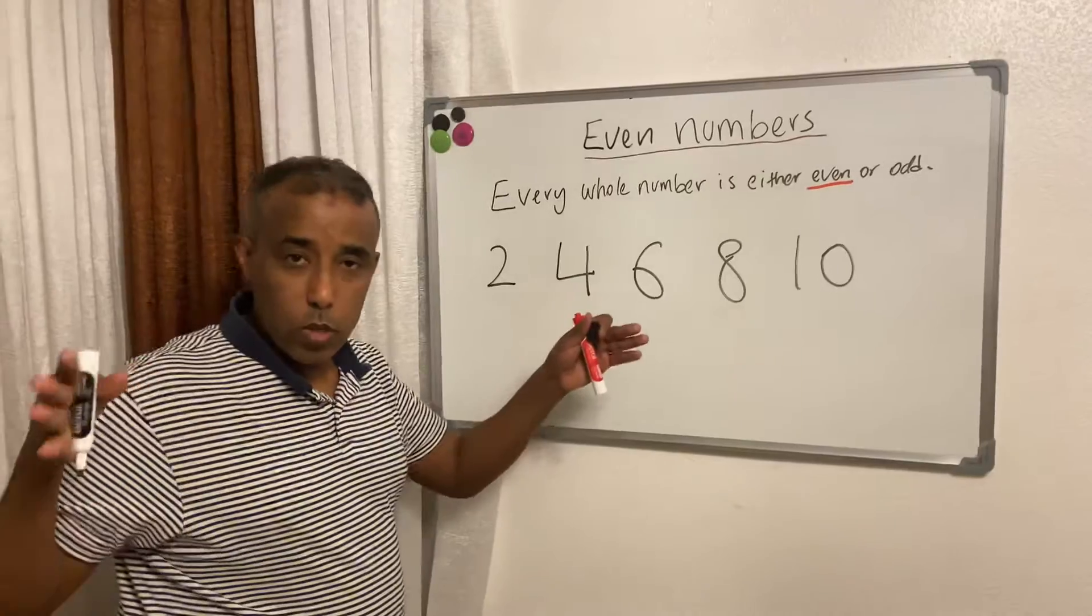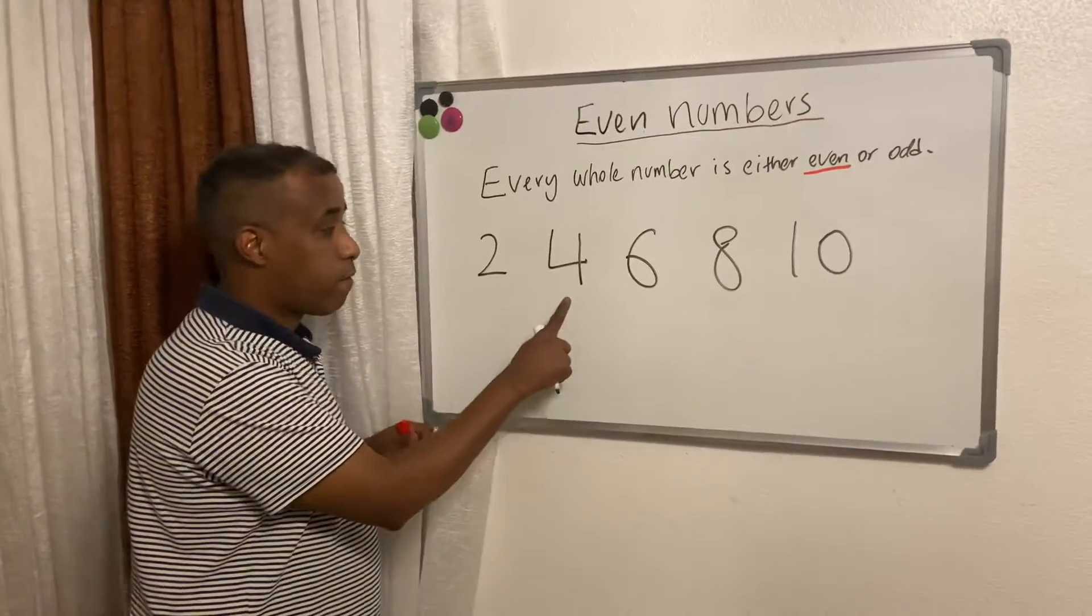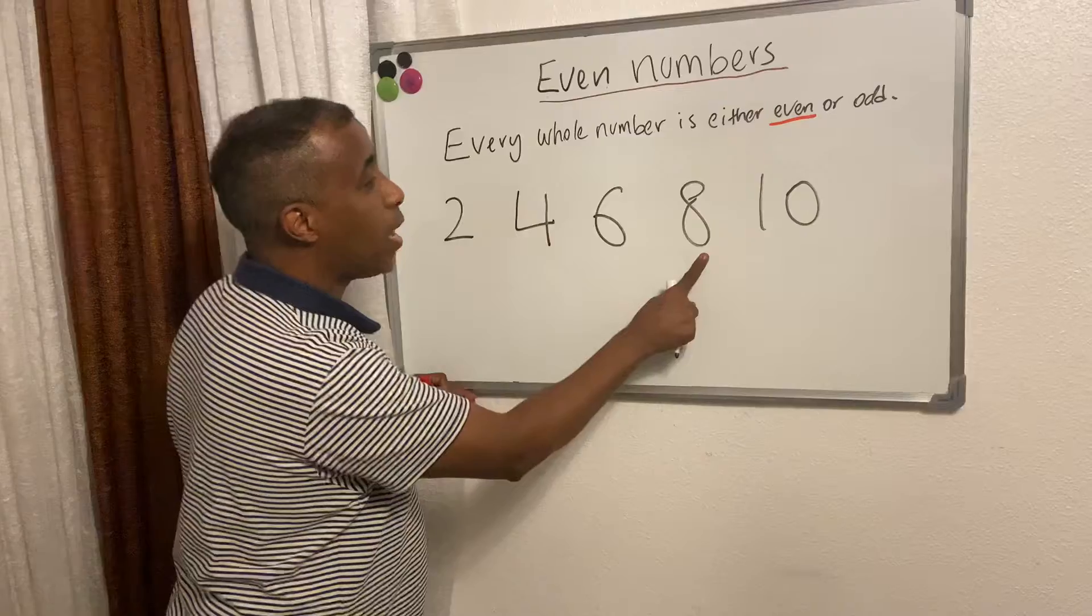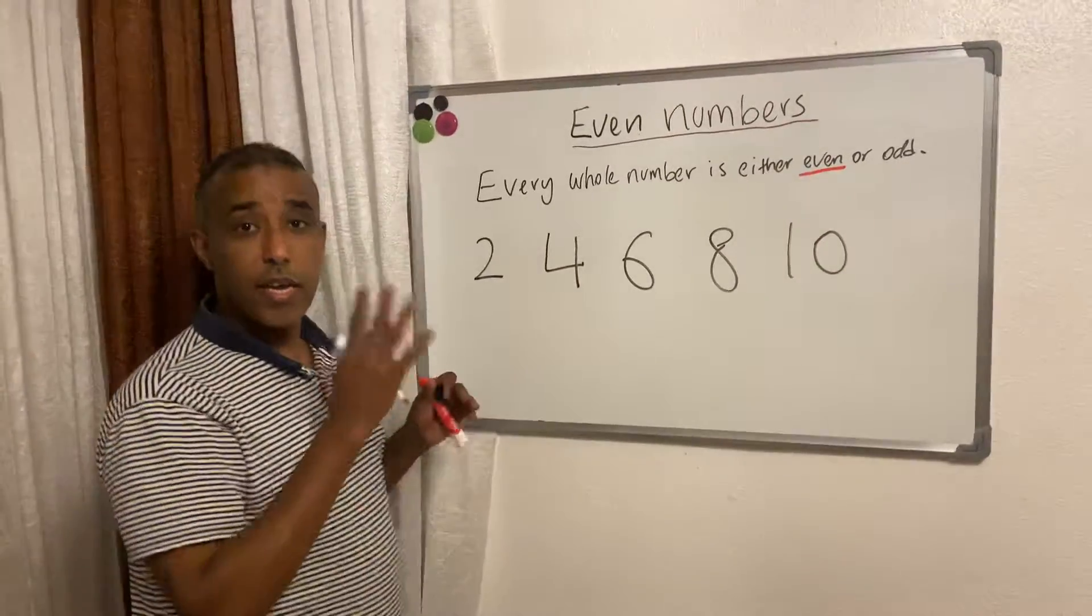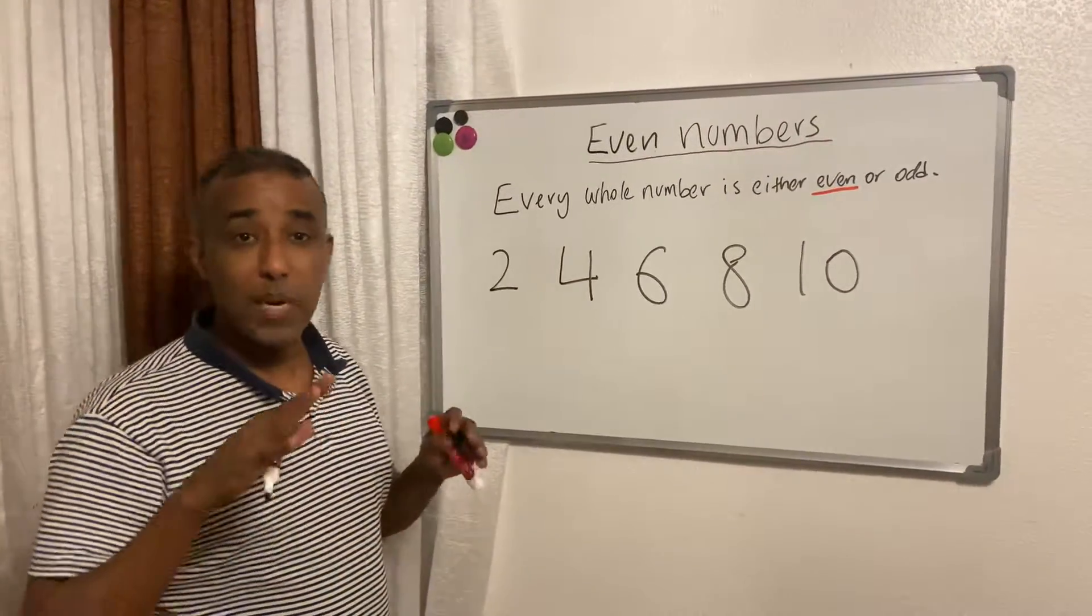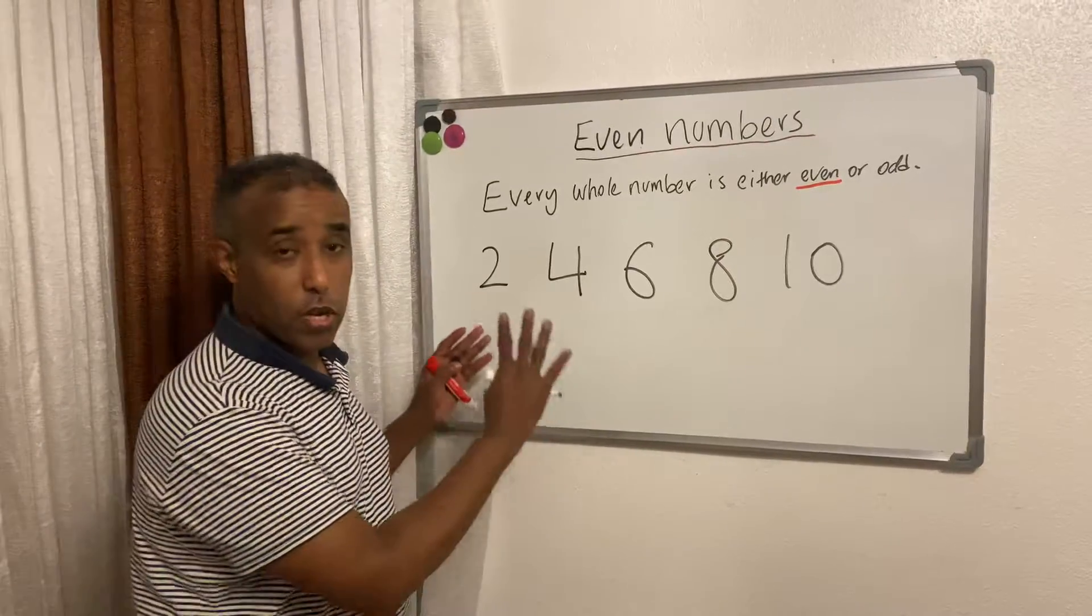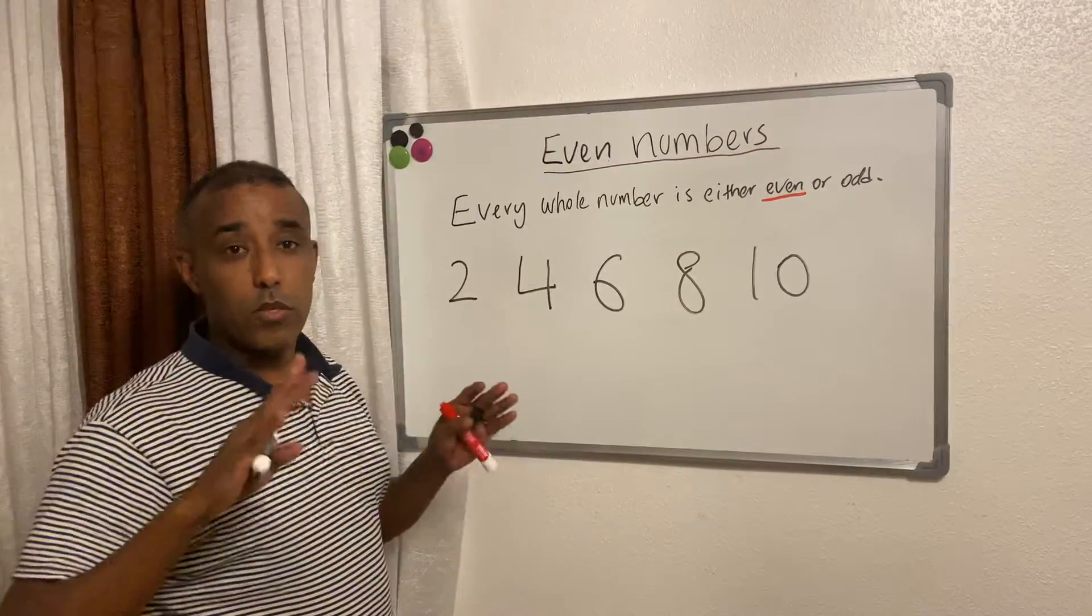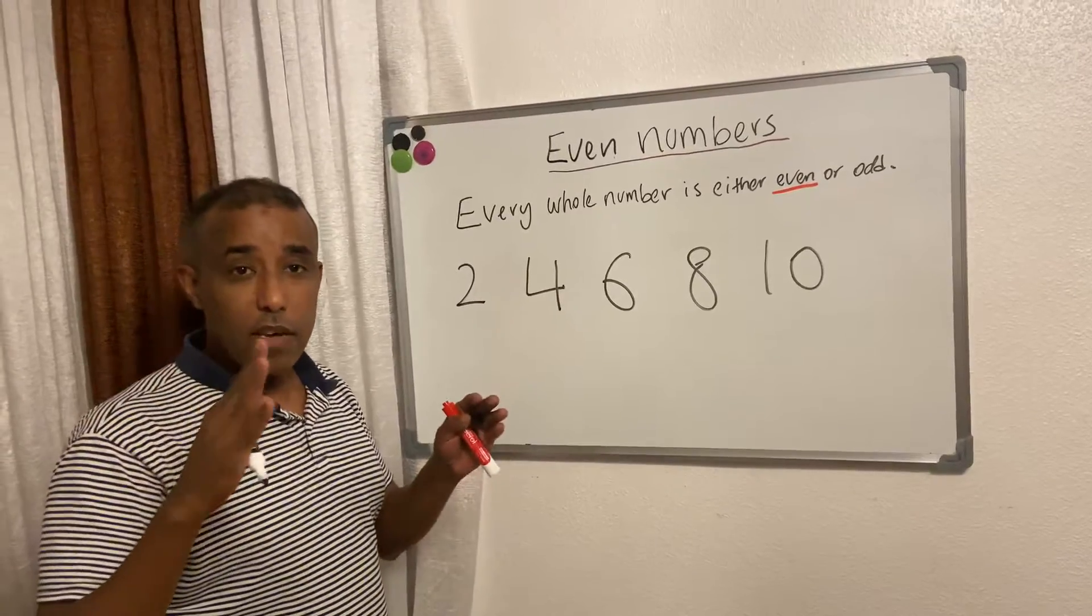In one to ten, 2, 4, 6, 8, 10 are even numbers and they are the basic even numbers. Once you recognize these numbers, you know even numbers even if it appears with another number. I'm going to give you an example in a minute.